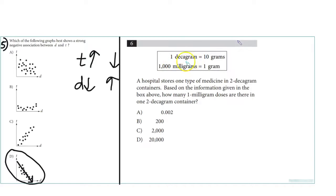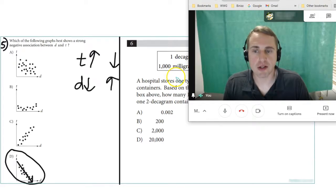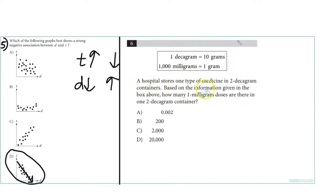Number 23: One decagram equals 10 grams. A thousand milligrams equals 1 gram. A hospital stores one type of medicine in 2 decagram containers. How many 1 milligram doses are there in a 2 decagram container? First, we have a 2 decagram container, that's 20 grams. But 1 gram is 1,000 milligrams, so we need to times this by 20. That would be 20,000 milligrams in 20 grams. You got to be careful with the zeros.